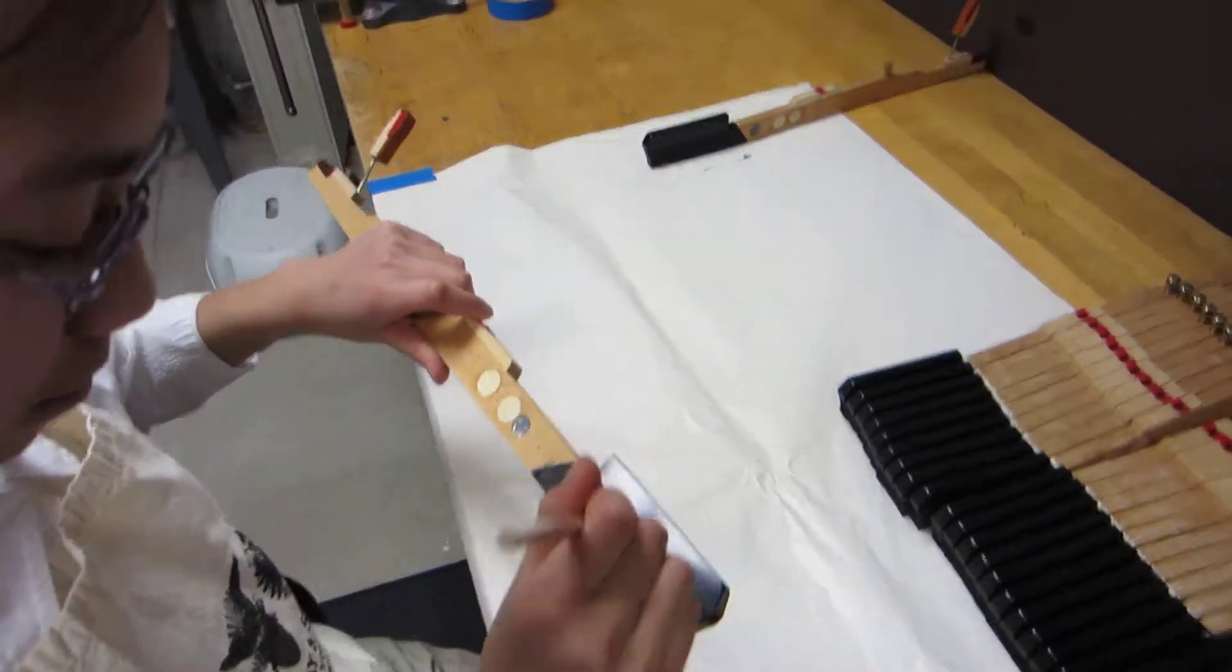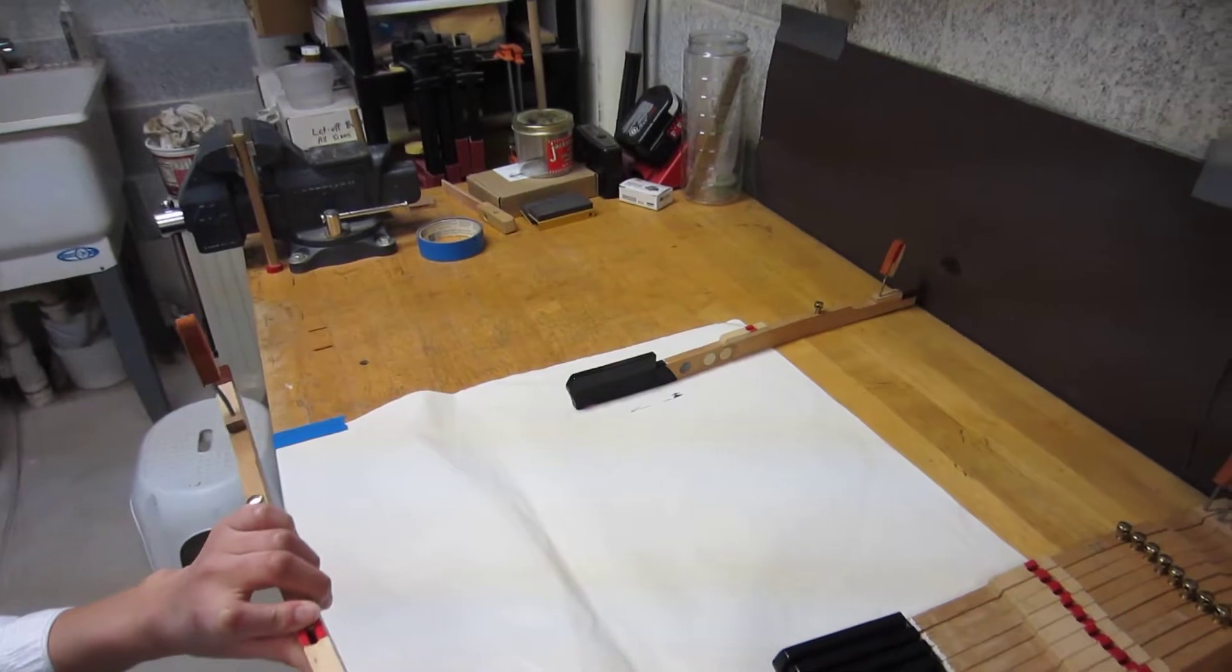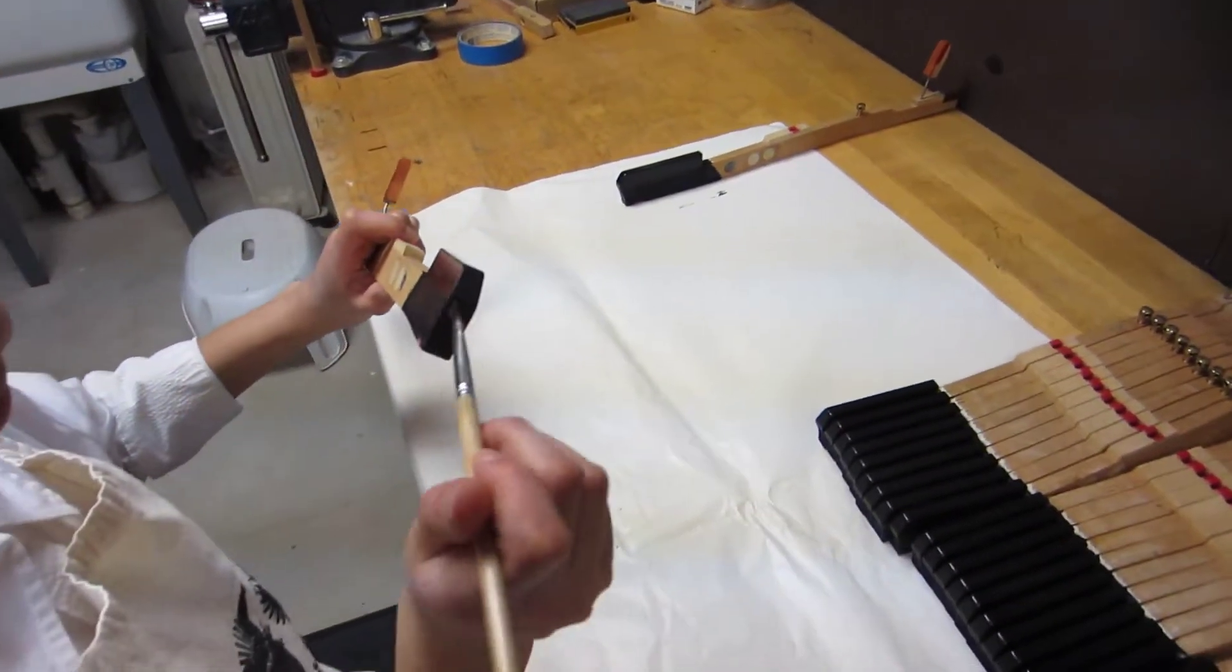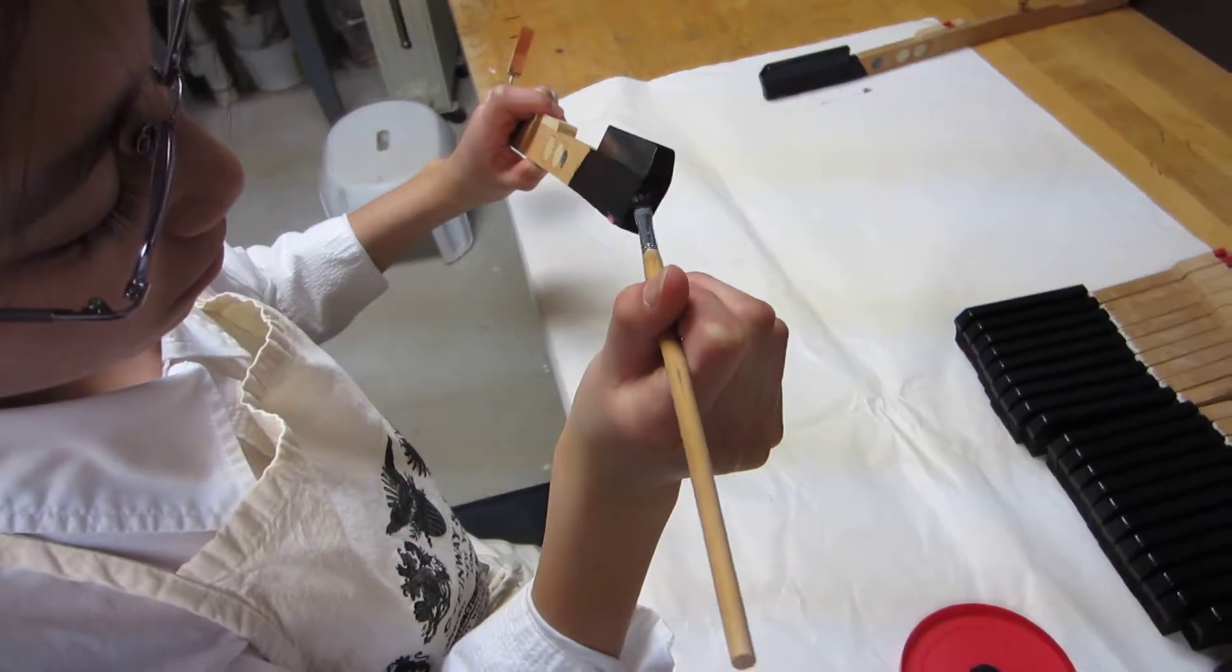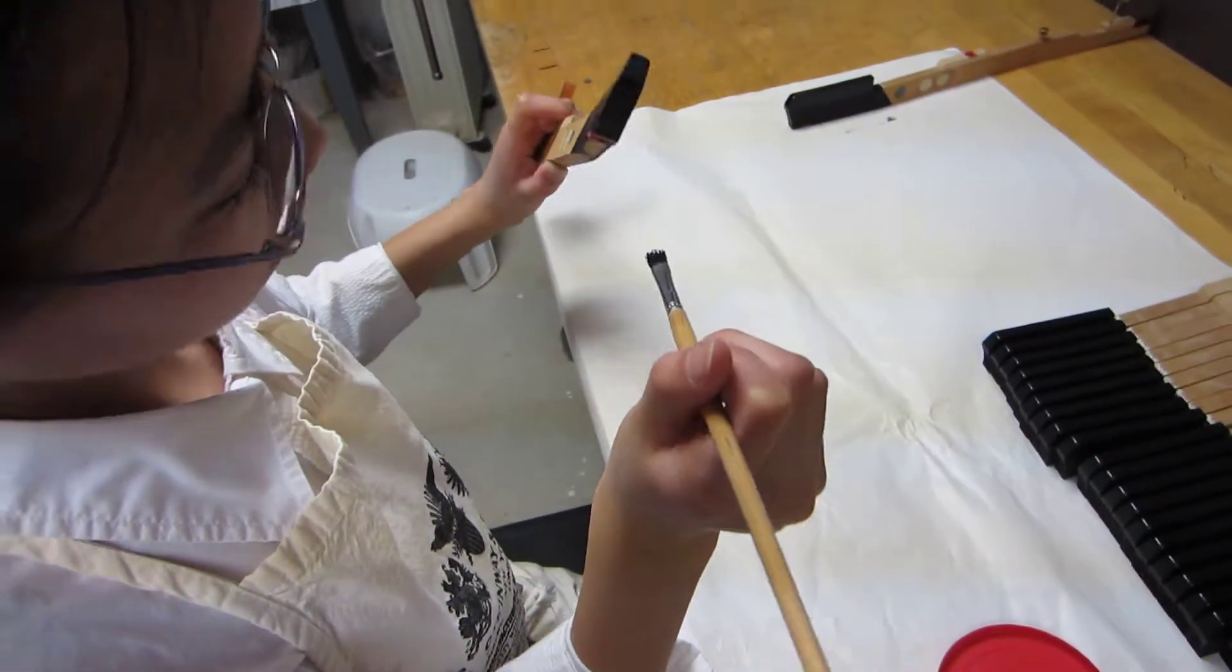When she's done with that, she puts it aside over there to dry. She's being very careful especially to paint the front because that's the part you might see when you press down the natural keys.